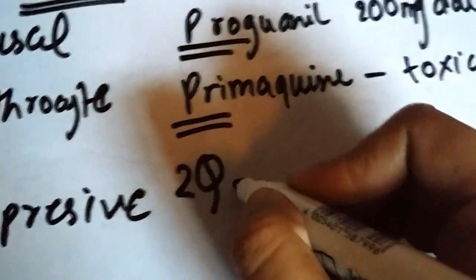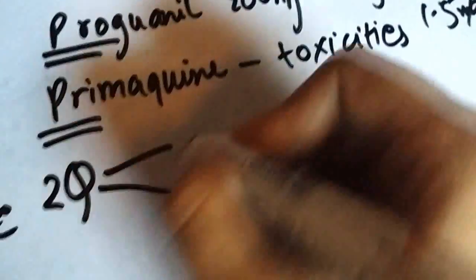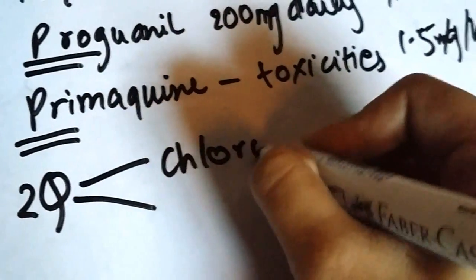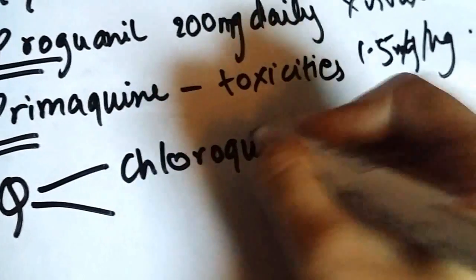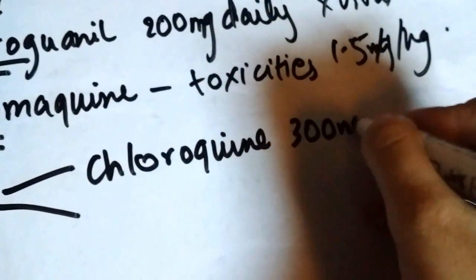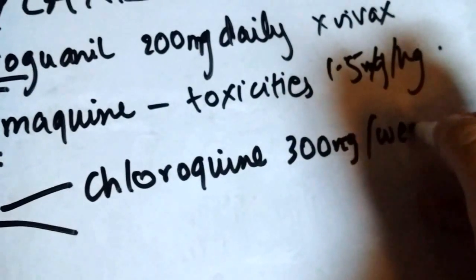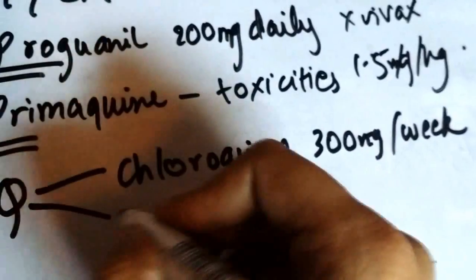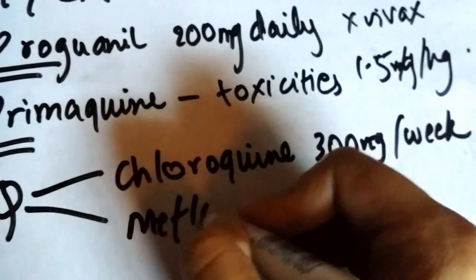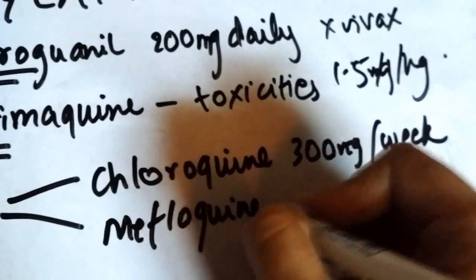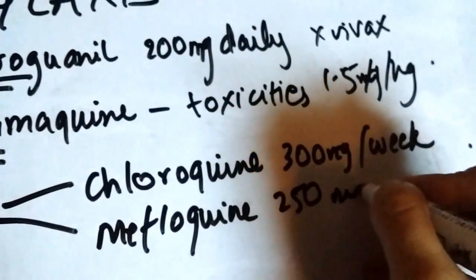In suppressive prophylaxis we have two queens. One is chloroquine, given 300 milligrams every week, and there is mefloquine.